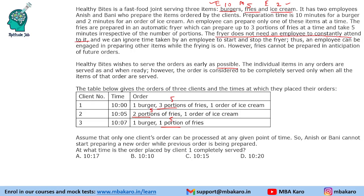Question: at what time is the order placed by client 1 completely served? We need to finish one person's order before serving the next. Burger takes 10 minutes, fries takes 5 minutes, ice cream takes 2 minutes. To optimize, all three things start simultaneously: A prepares the burger, the fries go in the machine, and B prepares the ice cream. The highest time is the burger at 10 minutes, so the order will be delivered at 10:10 AM.